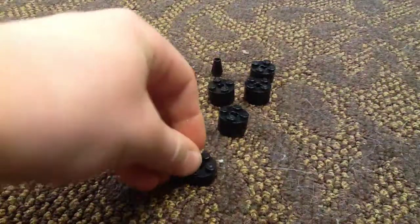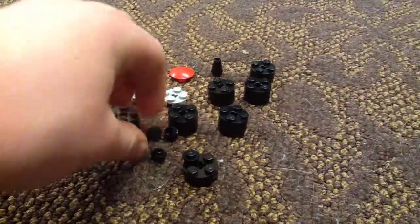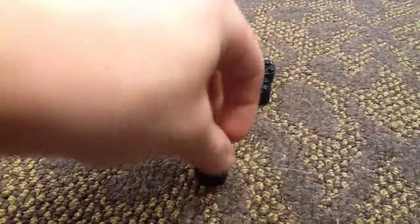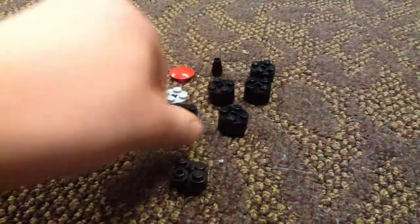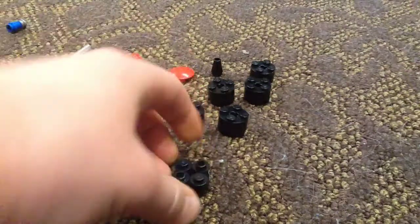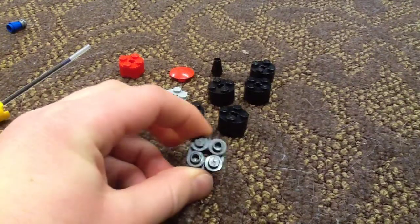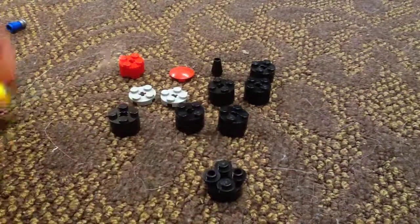So we're gonna start off by taking two, two by two round tiles. We're gonna stack them on top of each other like that. Then, we're going to take four, one by one, circular, stud things. And we're gonna place them in the four corners like that. And that leaves just a big enough gap for the end of the rainbow loom to kind of stick in.